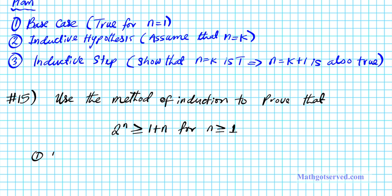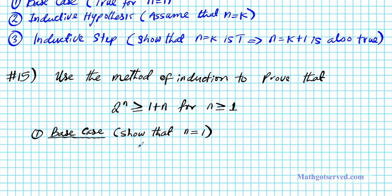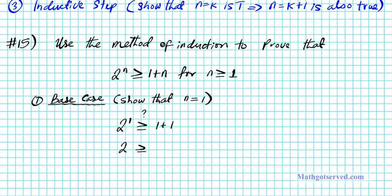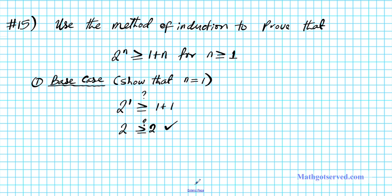We'll start with the first part: the base case. For the base case we are going to show that n equals 1 is true. All candidates for n are 1 and every integer greater than 1. If we input 1 on the left side, we get 2 to the first power, and we check whether it is greater than or equal to 1 plus 1. Is 2 greater than or equal to 2? The answer is yes — it checks out. So our base case, or foundation, is solid.